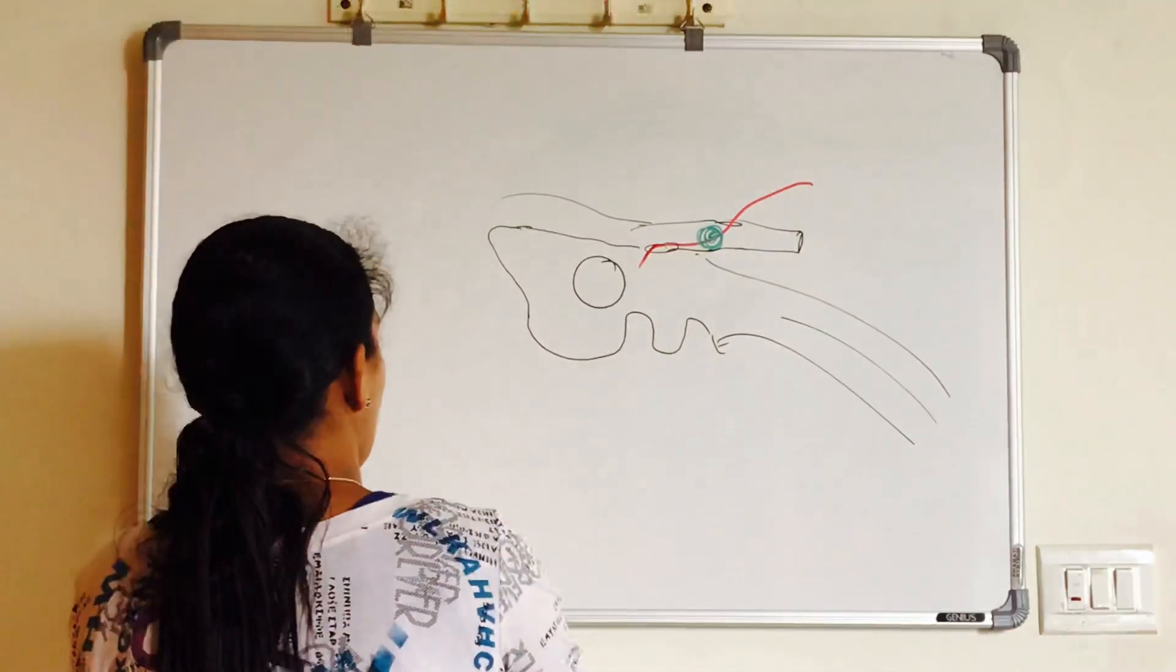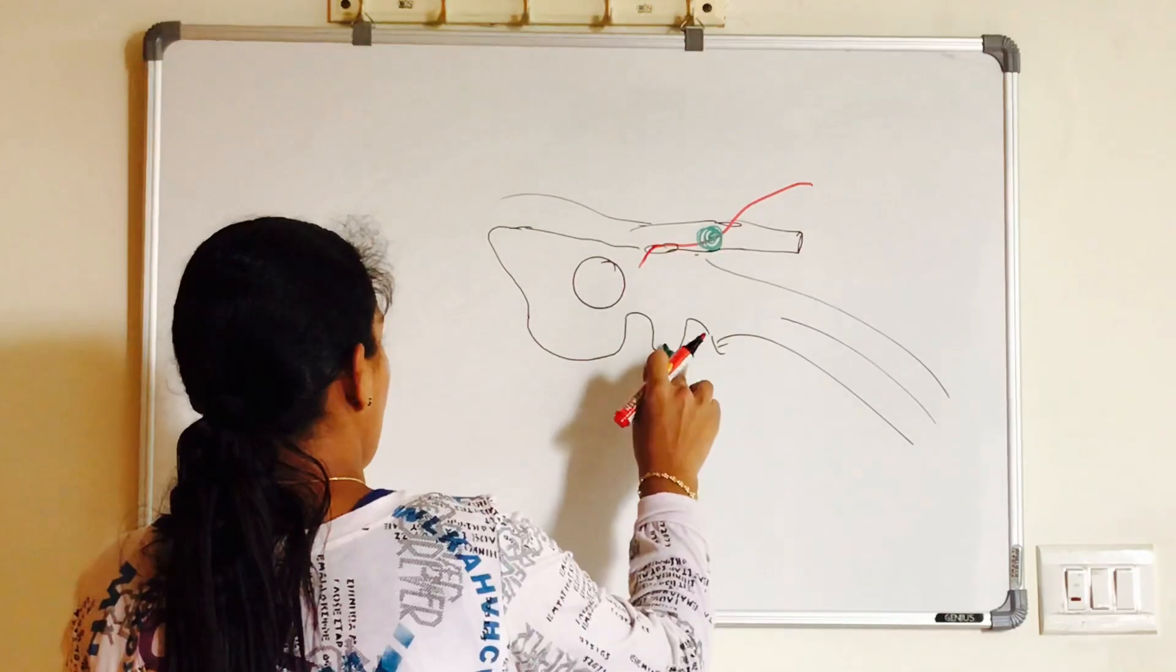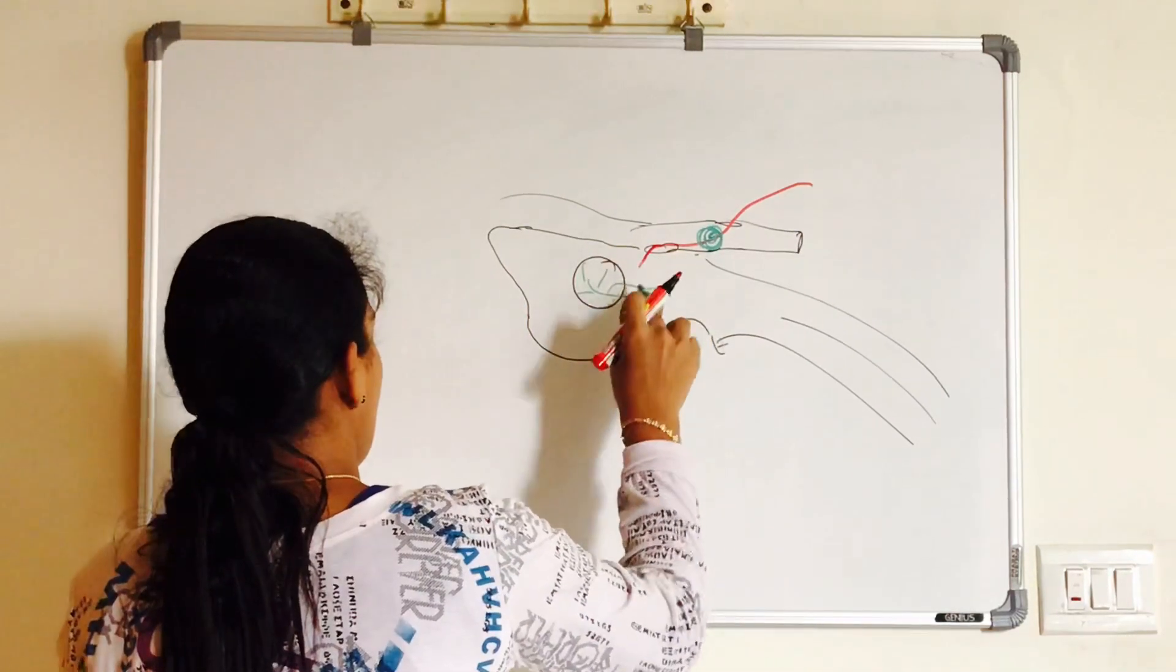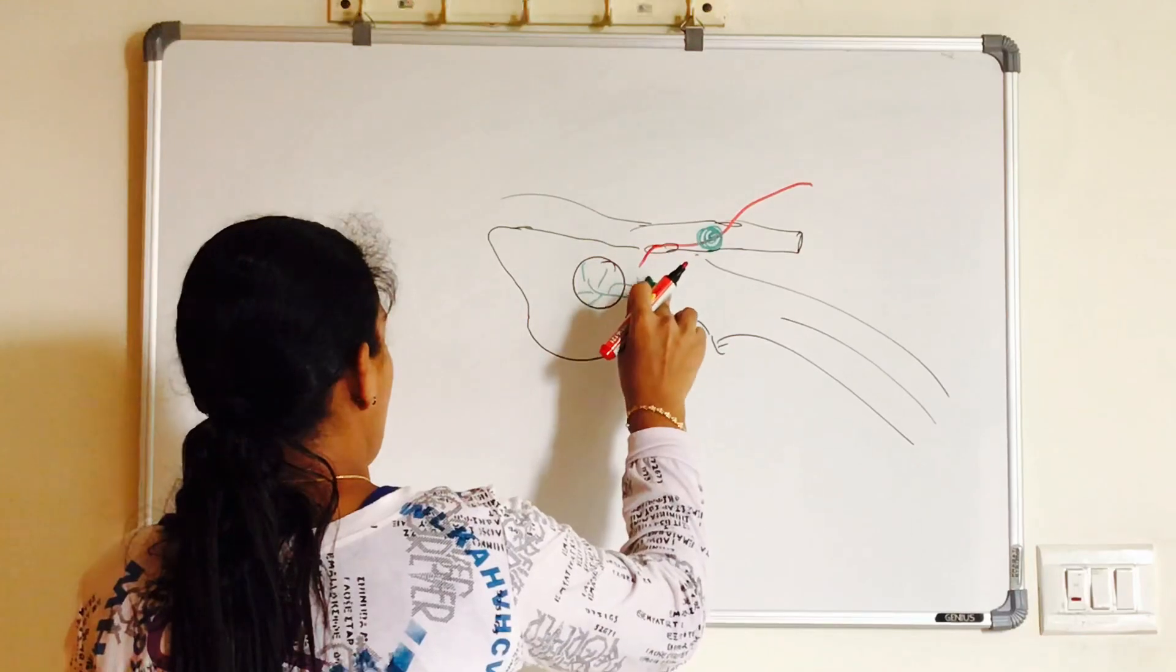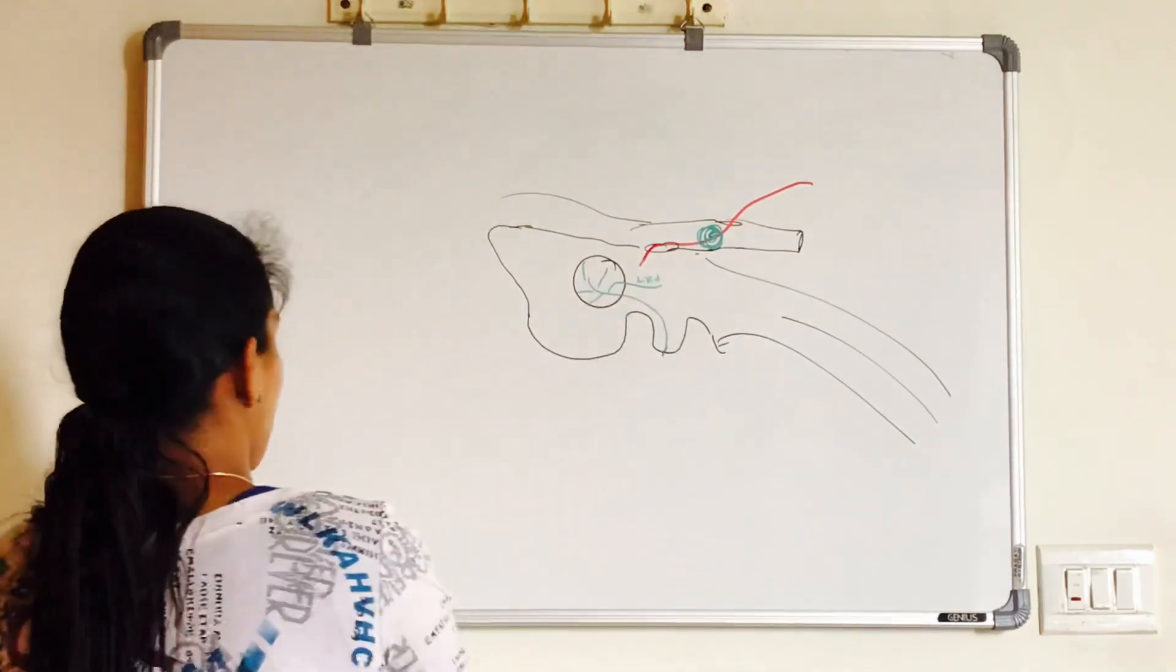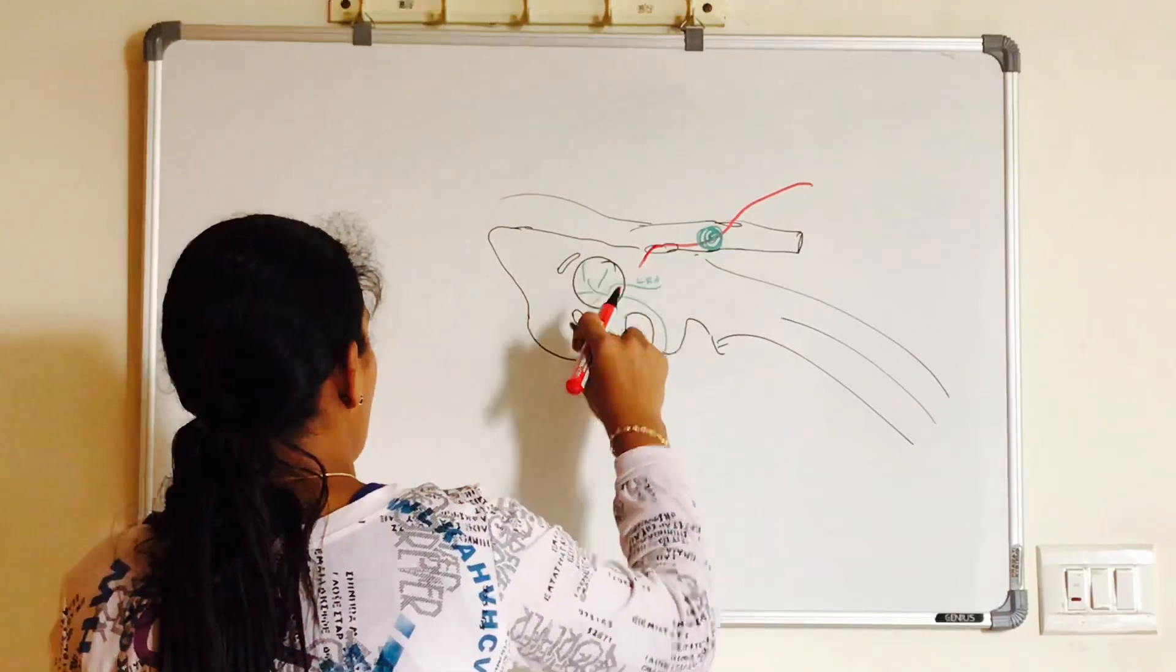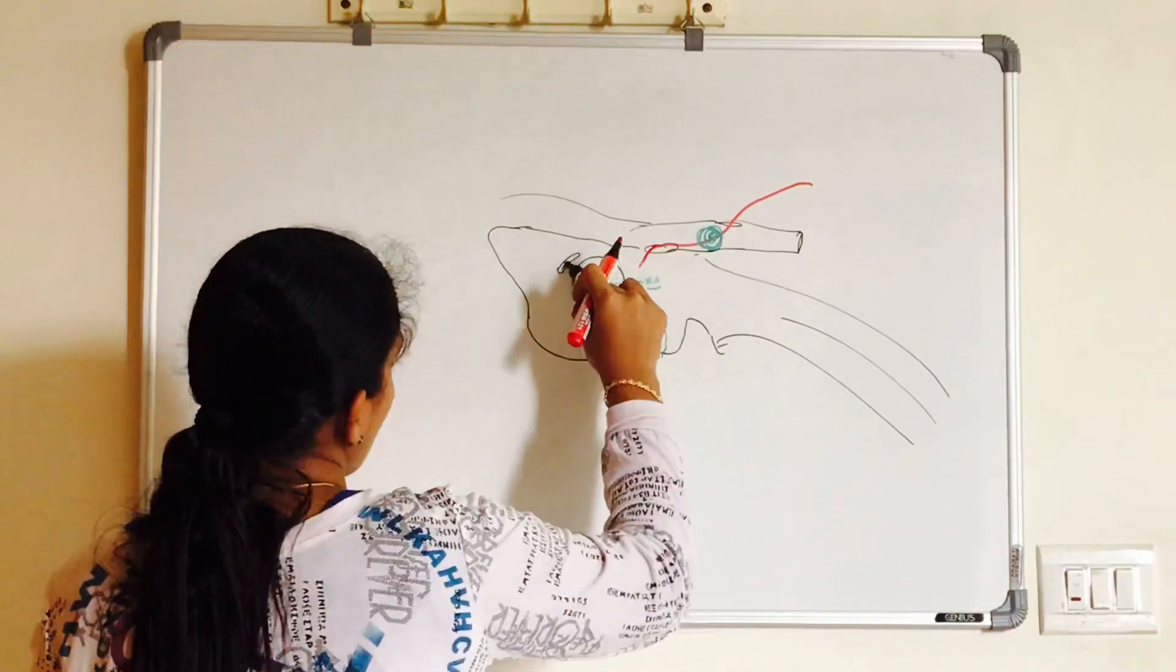What is that bulge present in the medial wall of the middle ear cavity? That is your promontory. You have tympanic plexus of nerves over the promontory. What is promontory? The first basal turn of cochlea forms a bulge on the medial wall.